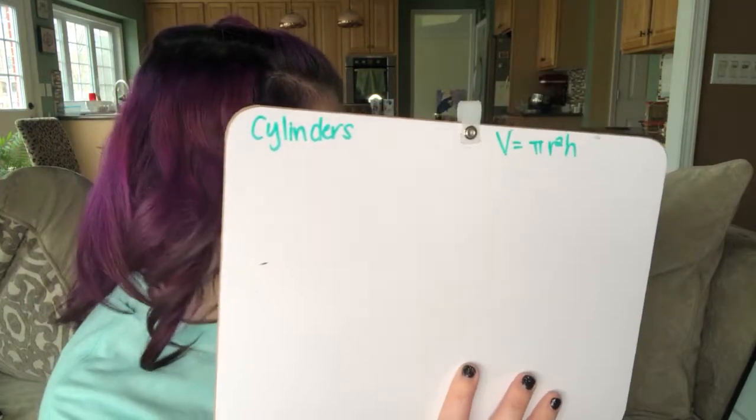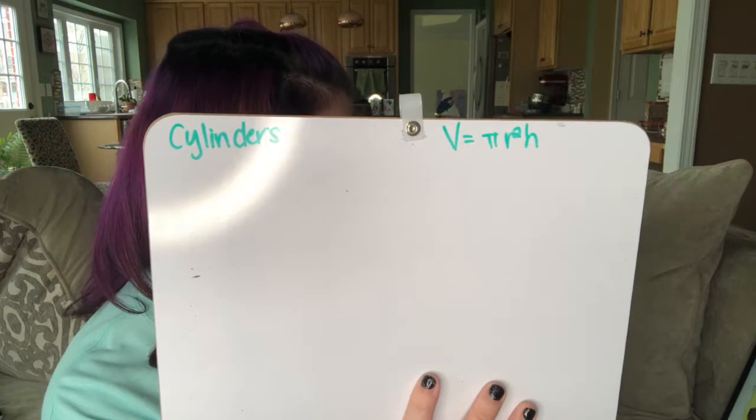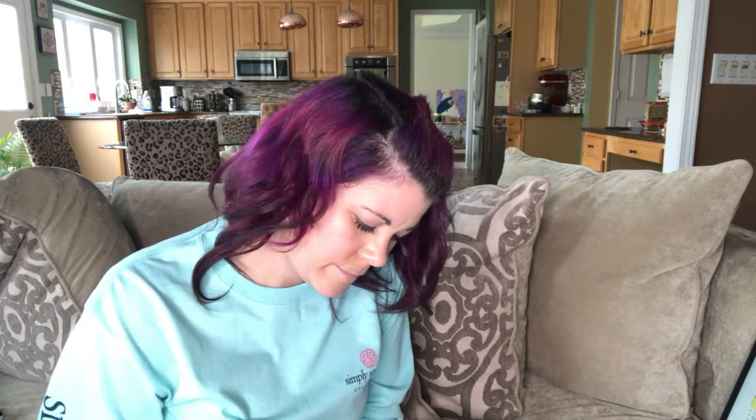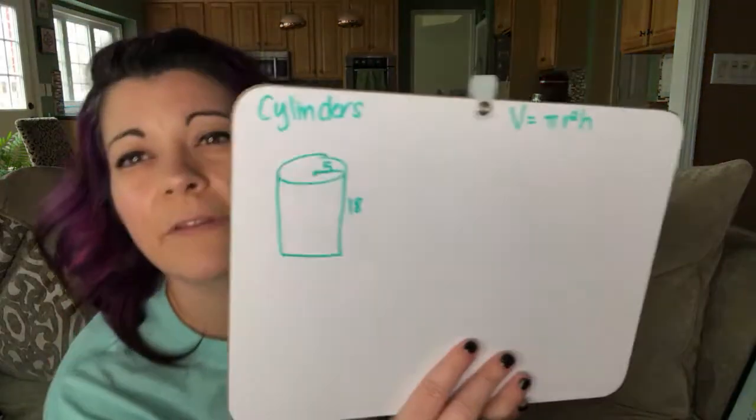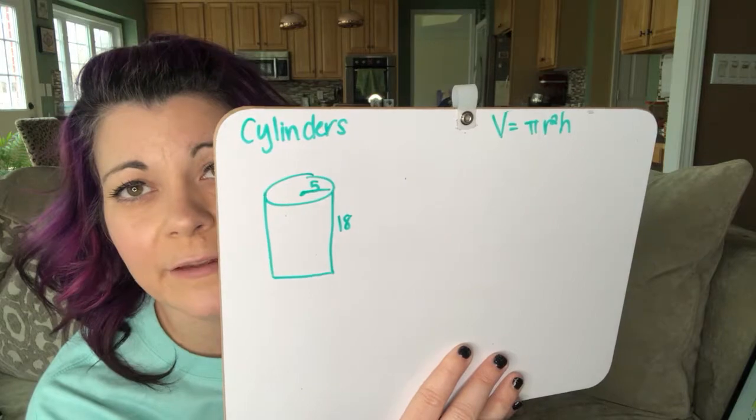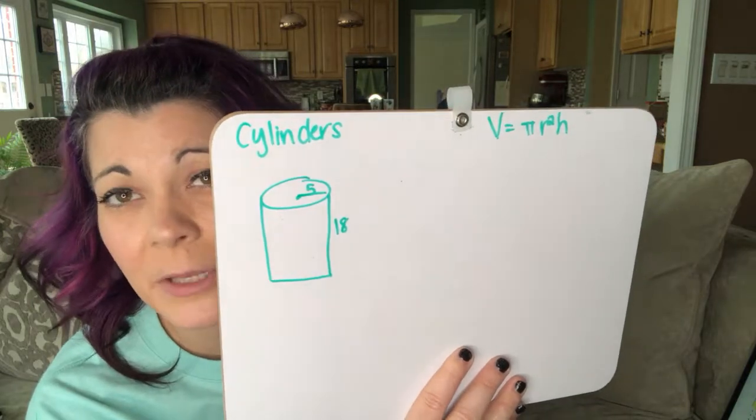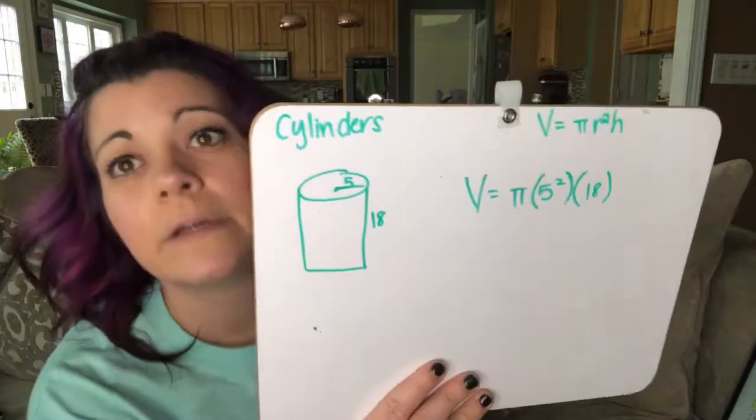And R stands for radius. So let's do a cylinder problem. We have a cylinder with the radius of five and a height of 18. So we just plug in things that we know to the formula. Volume equals pi r squared, so that would be five squared times H, which is 18. And now we're going to solve.